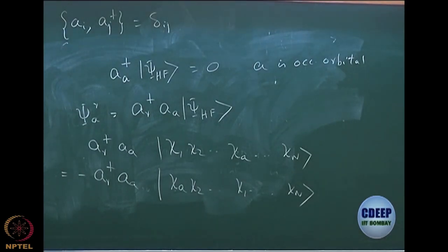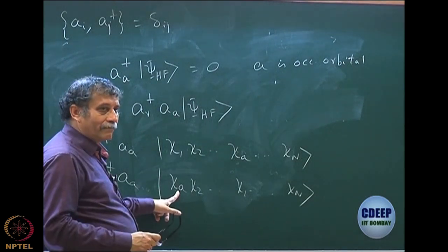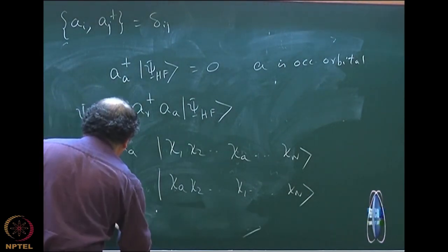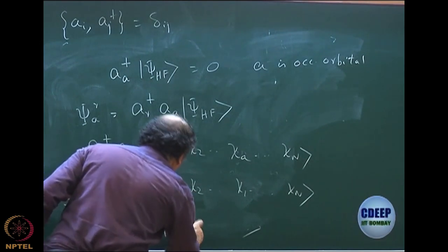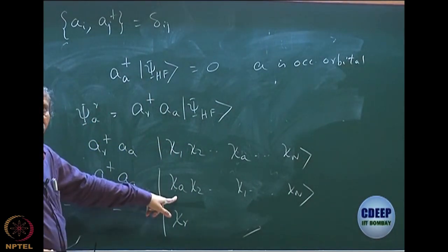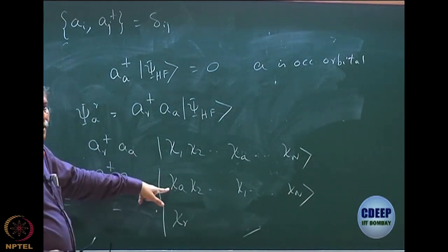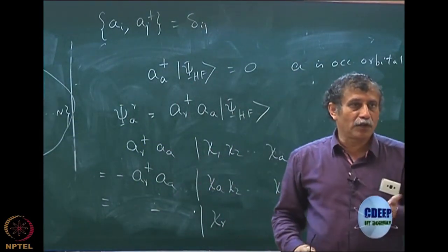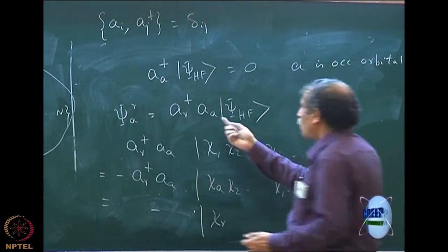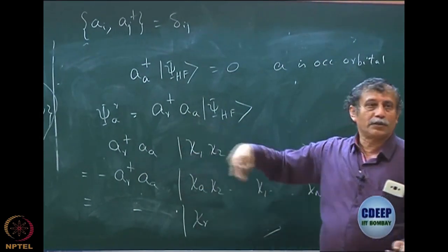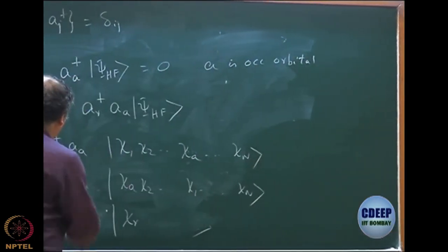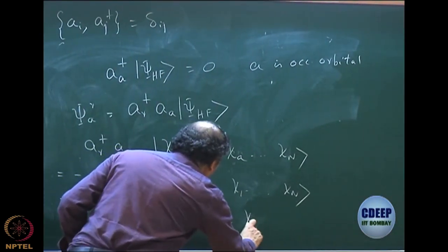Please proceed very carefully — the algebra has to be very correct. Now I can annihilate chi-A and then create chi-R, A_R-dagger. So I can quickly write this as: minus chi-A will be replaced by chi-R. A will destroy immediately to the right, R-dagger will create immediately to the left, and remember this creation is allowed because R is a virtual orbital. R is virtual because I am writing psi_A^R, so A is occupied and R is virtual — it is not present in Hartree-Fock.